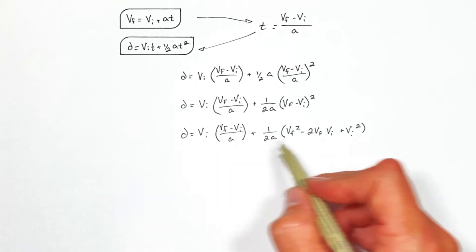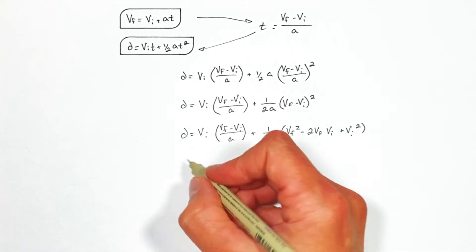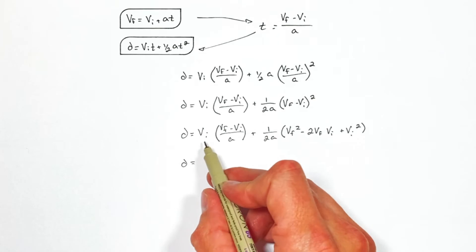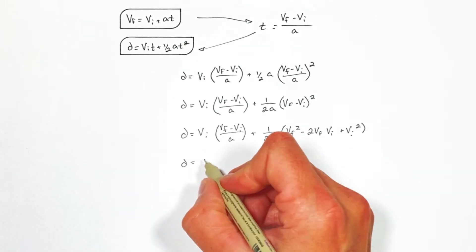Now I want to get both this left term and right term to have the same denominator. And while we're at it, let's distribute this VI in here.